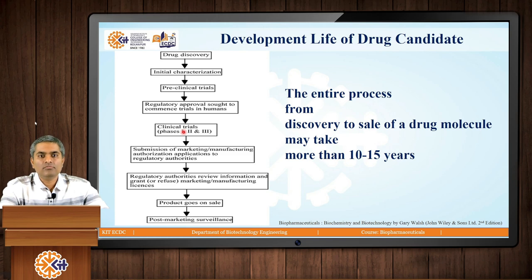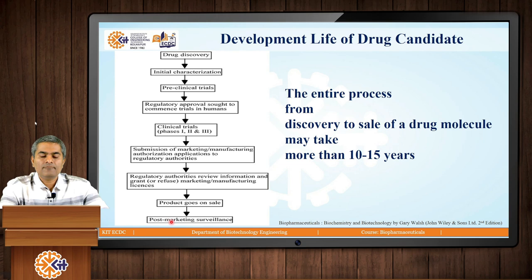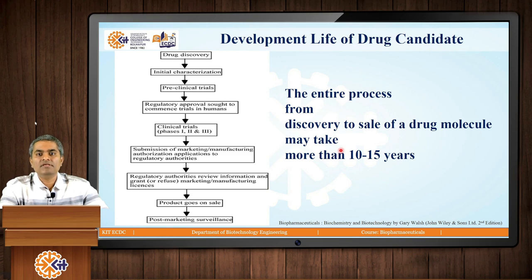The clinical trials in humans are of 4 phases. The first 3 phases and their results are presented to the authorities, and if they approve the manufacturing and marketing license, then finally the drug goes to sale. Post-selling, there is also clinical phase 4 where post-marketing surveillance is followed. This entire development life cycle of a drug may take from its discovery to the market around 10 to 15 years or more.